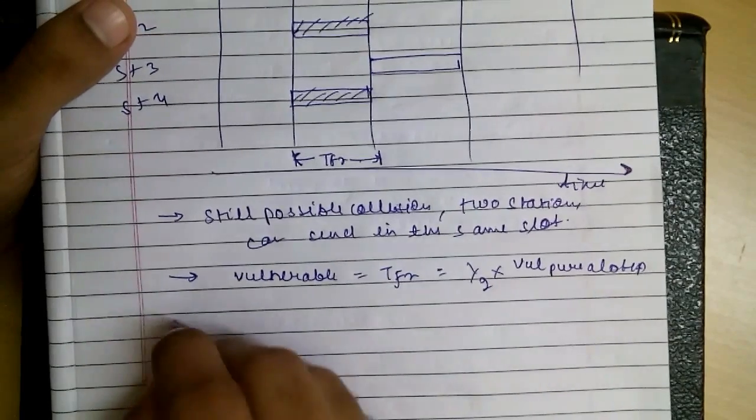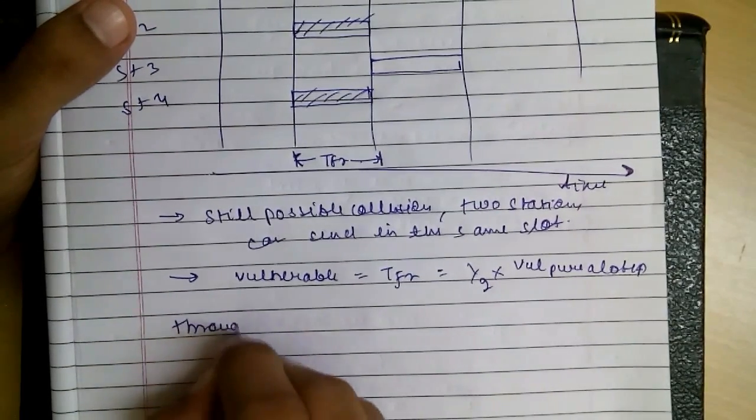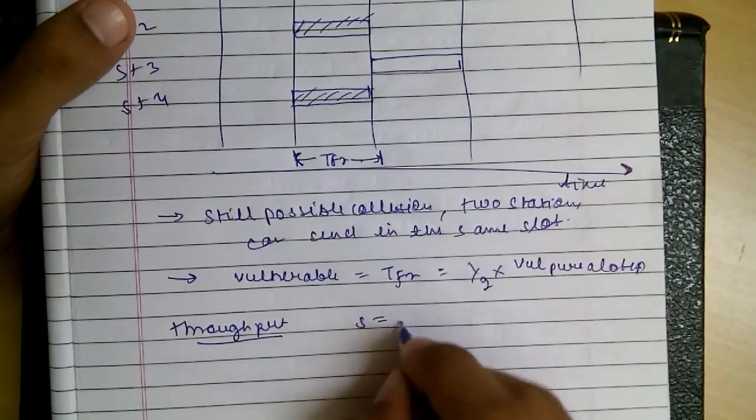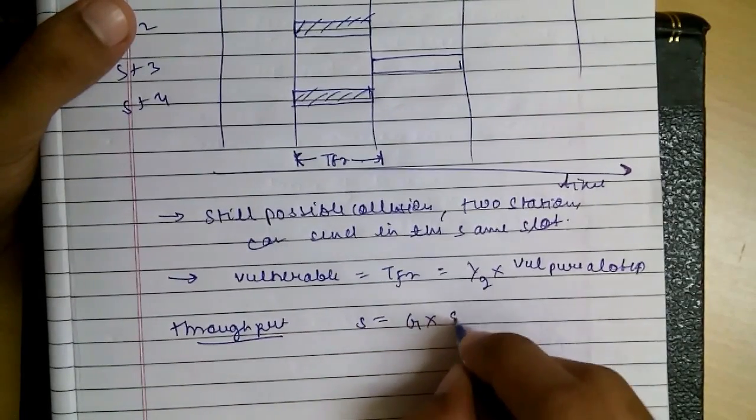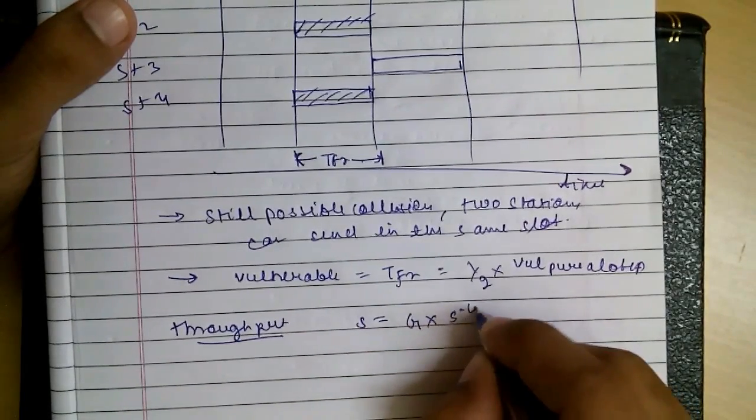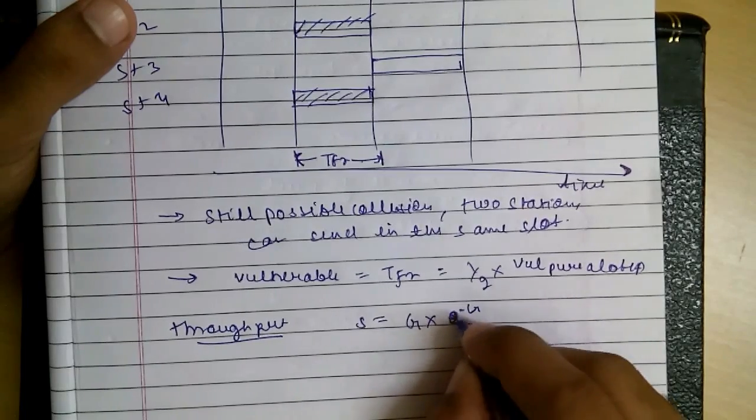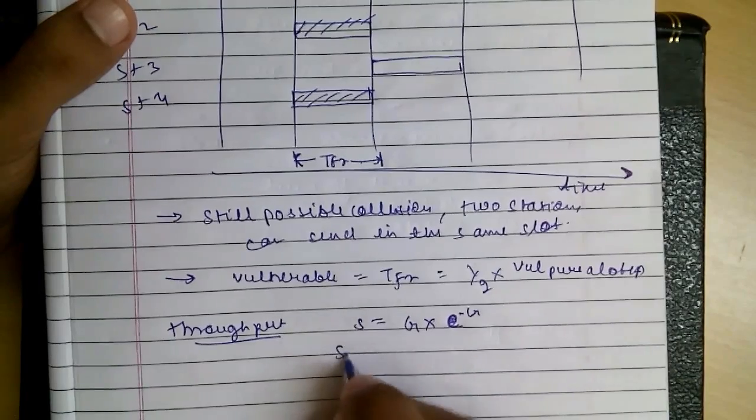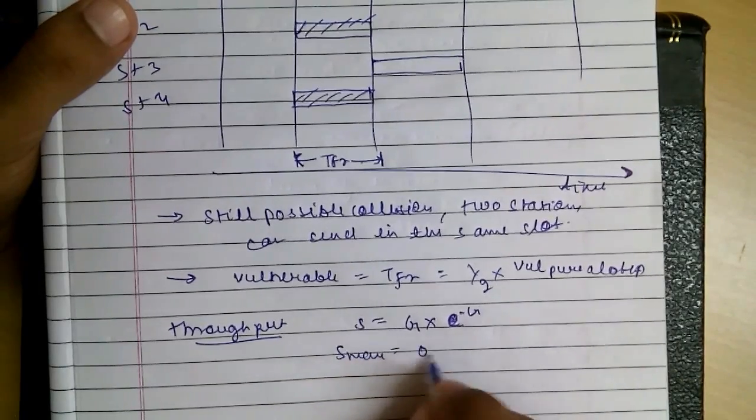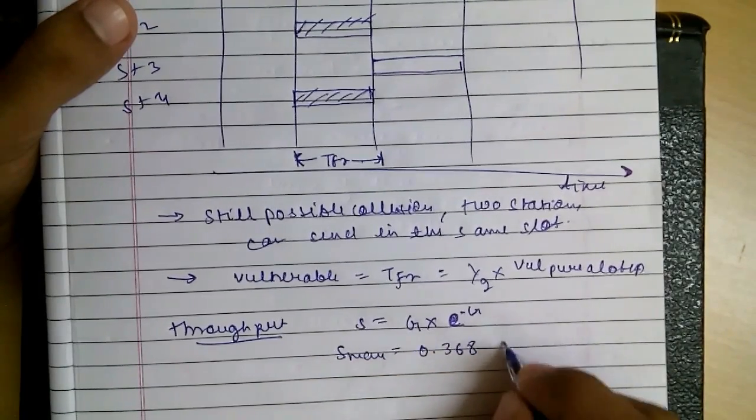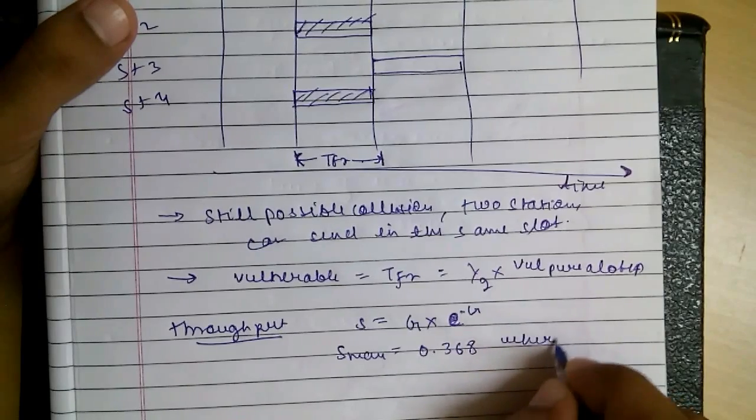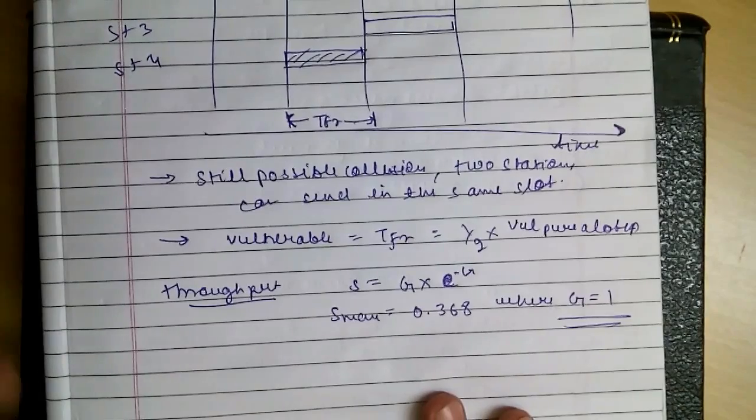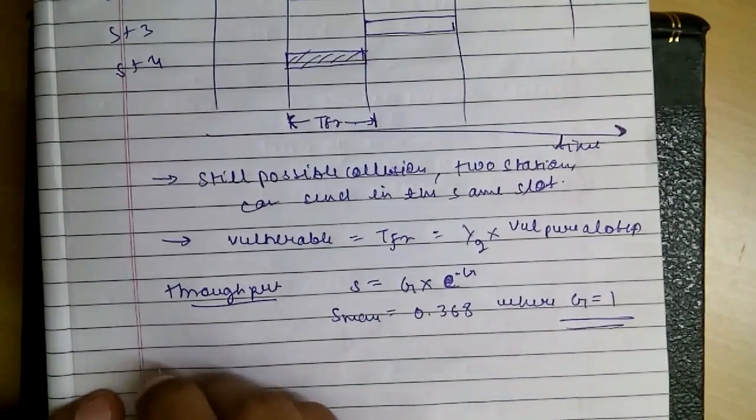So the throughput is given as G times e raised to minus G, and the max is when G is equal to 1, which equals 0.368. So I will define it in words.